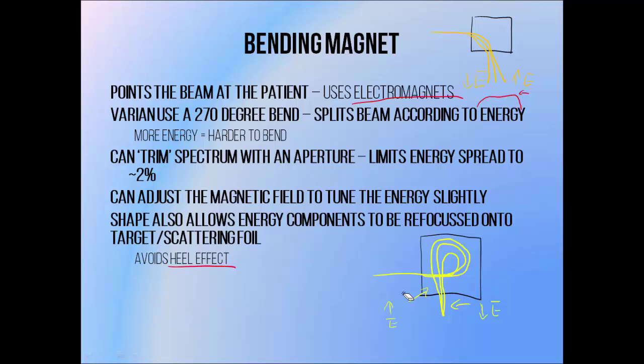Because the electron beam is separated into different energy components we can pass it through an aperture which allows us to select for very specific energies — ones that are too low energy will hit one side of the aperture and won't make it through, and ones that are too high energy will hit the other side. This allows us to limit the spread of energy within our beam to approximately 2%. Thanks to this aperture we can also adjust the strength of the magnetic field slightly in order to select for slightly different energies and fine tune the beam energy if we wish.